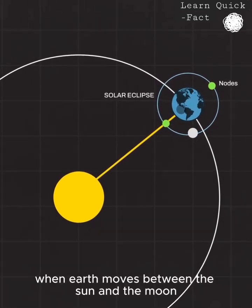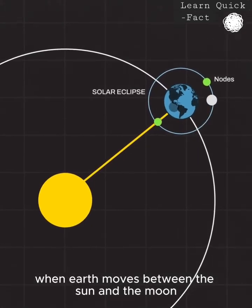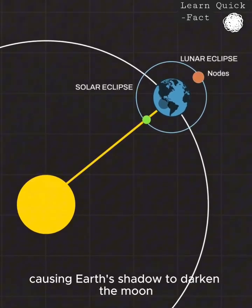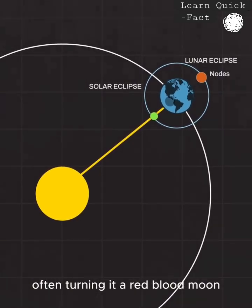A lunar eclipse happens when Earth moves between the sun and the moon, causing Earth's shadow to darken the moon, often turning it a red blood moon.